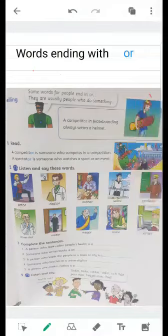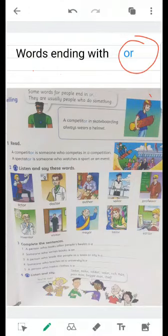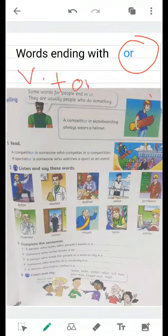Spelling, we have words ending with OR. OR is a suffix. What do we mean by that? A suffix is a group of letters, two or more letters, that we add to a word to change its type. Here we change the verb into a noun by adding OR.